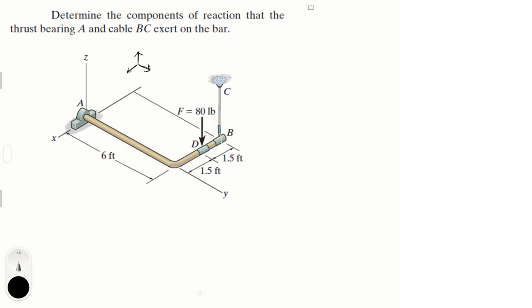Now we know that this thrust bearing has a reaction along the Z and a reaction along the X, but it doesn't have a reaction along the Y. That's why we copy these two. And this one has a reaction going straight up right here, so we only have three variables.